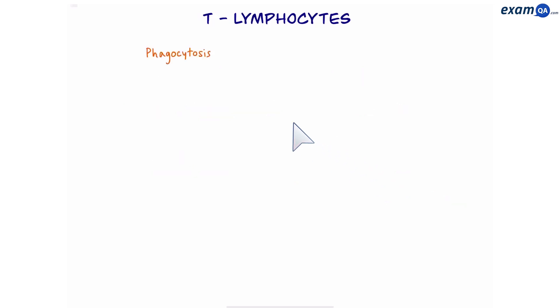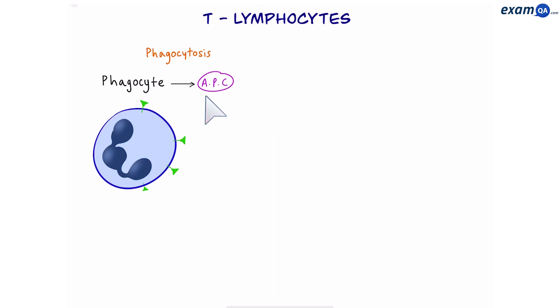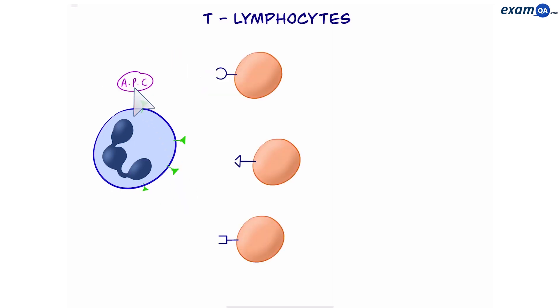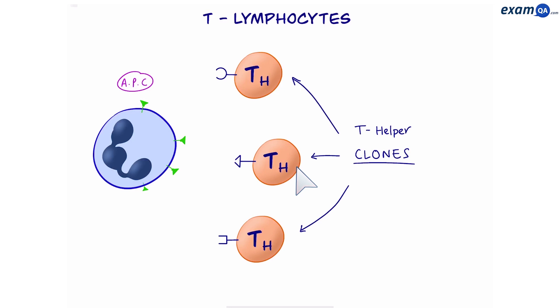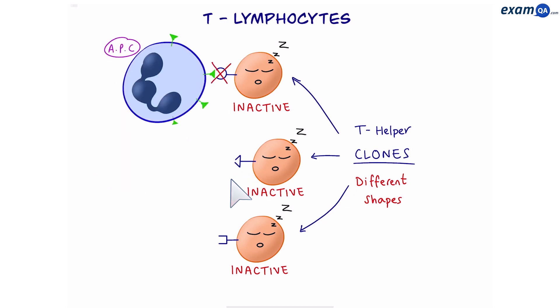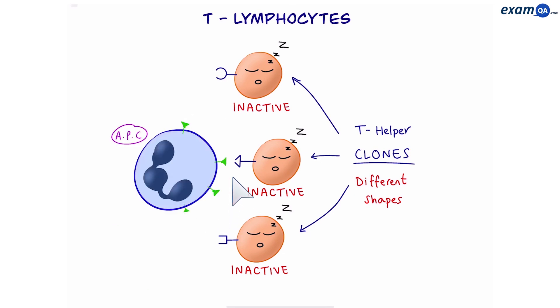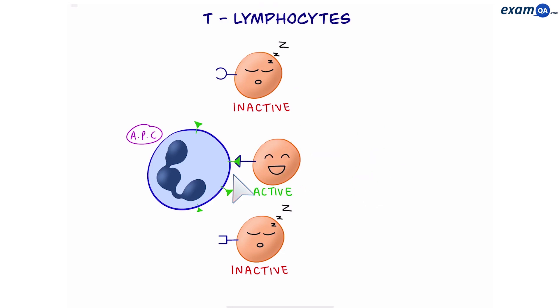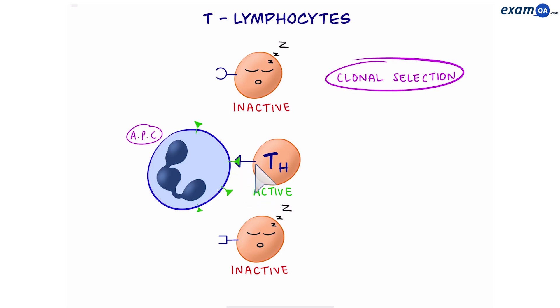Let's see how T lymphocytes work. The stage previous to this was phagocytosis, where a phagocyte turned into an APC by eating a pathogen. We can see the foreign antigens are on its surface. Now the APC is going to meet T helper cells. These are clones with different shaped receptors on their surface — right now all of them are inactive. The APC goes and finds the one with a complementary receptor to the antigen it's holding. We have a complementary fit. This T helper cell has now become activated. The process where the phagocyte finds the complementary T helper cell is called clonal selection.